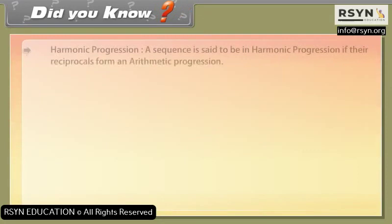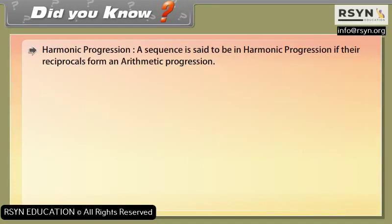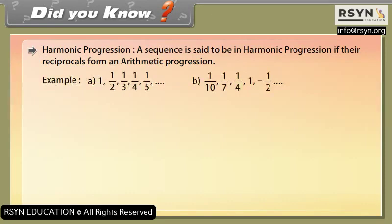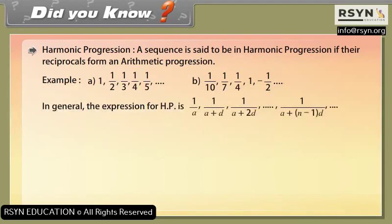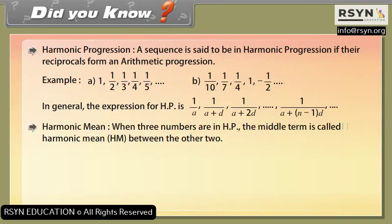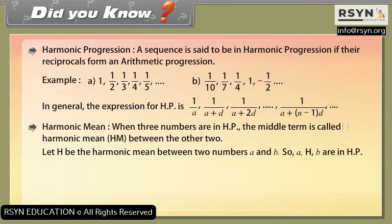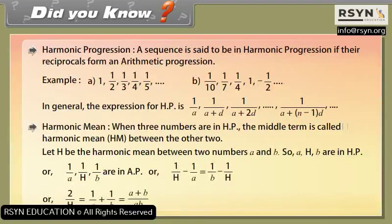Did you know? Harmonic progression: a sequence is said to be in harmonic progression if the reciprocals form an arithmetic progression. Example: 1, 1/2, 1/3, 1/4, 1/5, and so on; also 1/10, 1/7, 1/4, −1/2, and so on. Harmonic mean: when three numbers are in HP, the middle term is called the harmonic mean. Let H be the harmonic mean between A and B, so A, H, B are in HP, meaning 1/A, 1/H, 1/B are in AP. Therefore H = 2AB / (A+B).